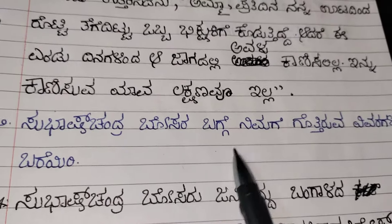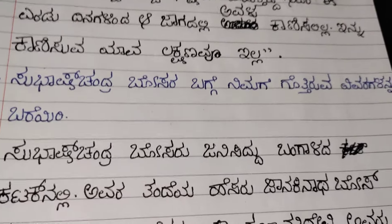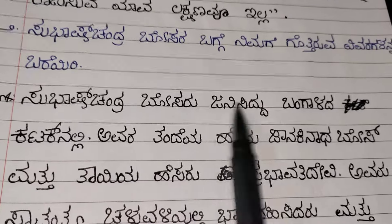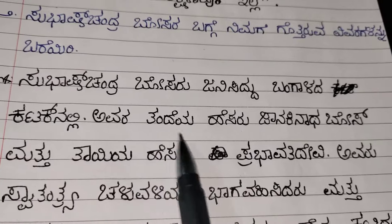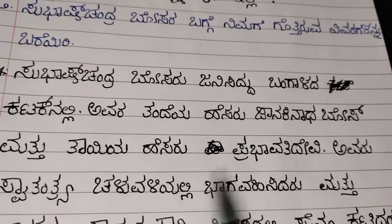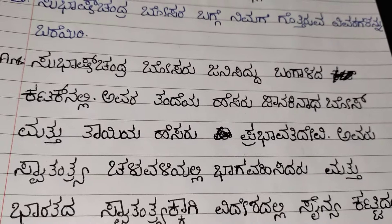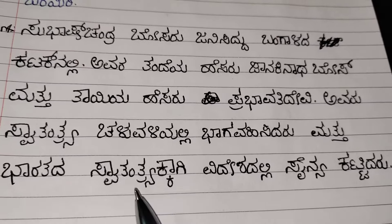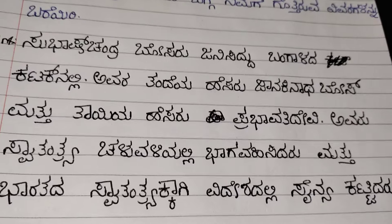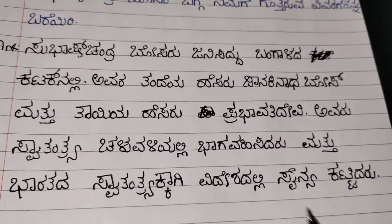Next one: what all you know about Subhash Chandra Bose, you need to write here. Answer: Subhash Chandra Bose was born in Katak. Father's name was Janakinath Bose and mother's name is Prabhavati Devi. He participated in the Indian independence movement. He built an army in abroad for India's independence.